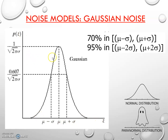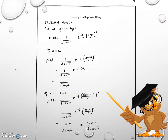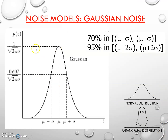One question that arises is: corresponding to μ, what is the value of P(z)? Just put z = μ in the formula. μ minus μ gives 0, and anything to the power 0 is 1. So the result is 1 by under root of 2π σ squared. Taking σ outside the root, it becomes 1 by 2 under root of 2π σ. That is how this value is justified.